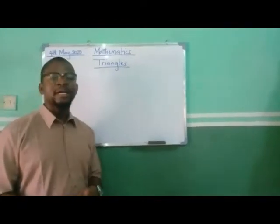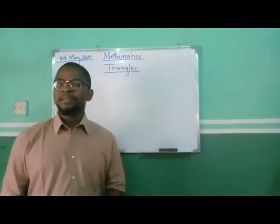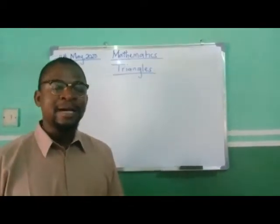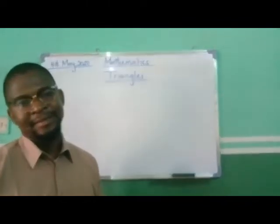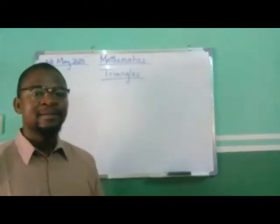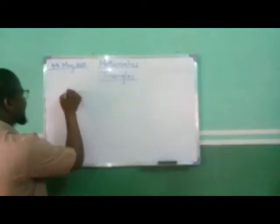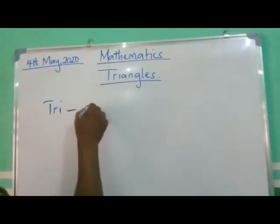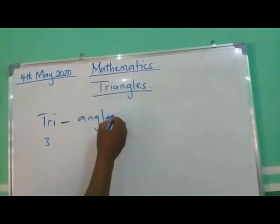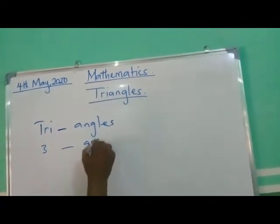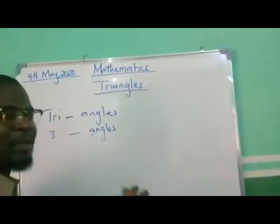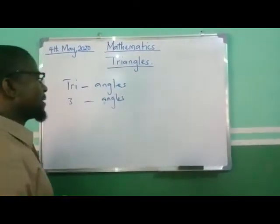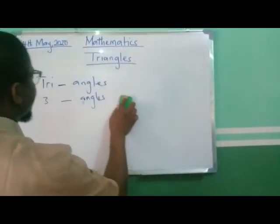So we are going to start with the meaning of triangle. What is a triangle? A triangle can be defined as a plane shape that has three angles, three sides and three vertices. From this name, 'tri' — which means three. Tri-angles. That is what is referred to as a triangle: a plane shape that has three angles, three sides and three vertices.